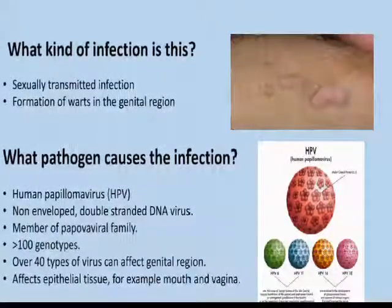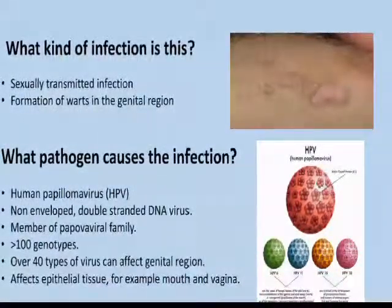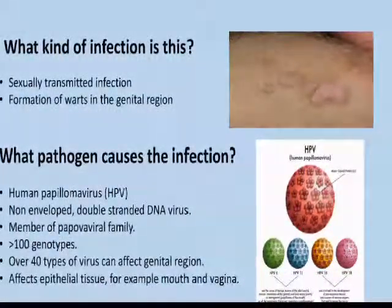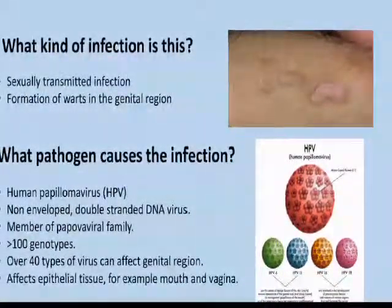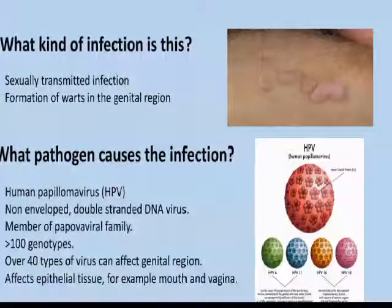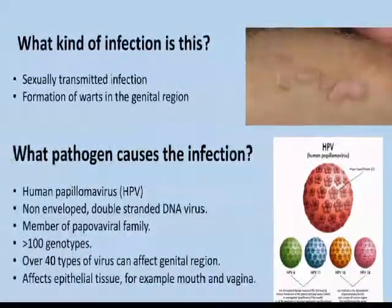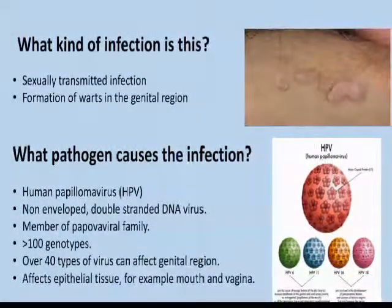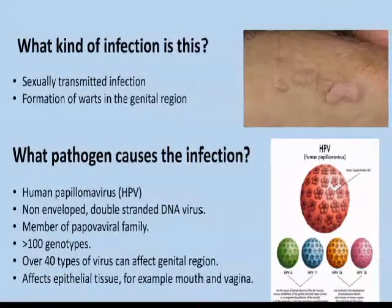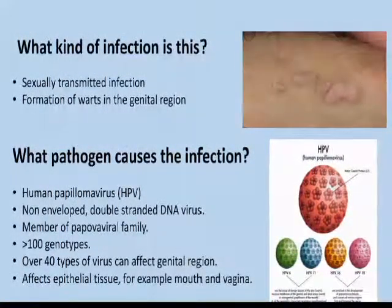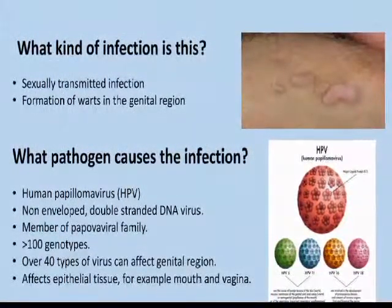What kind of infection is this? Anogenital warts, or genital warts, is a sexually transmitted infection. It is the formation of warts around the genital area.